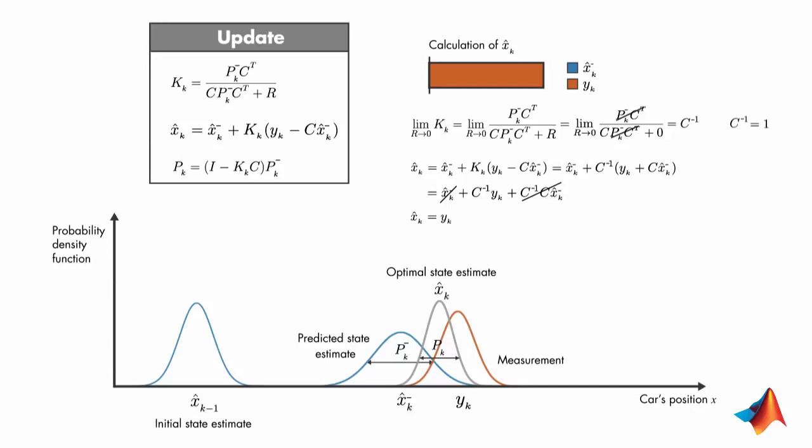Now, if we update our plot, we can show the measurement with an impulse function, which is shown with this orange vertical line. Note that the variance in the measurement is zero since R goes to zero. We found that the posterior estimate is equal to the measurement, so we can show it by the same impulse function.